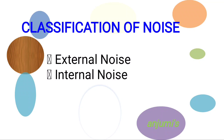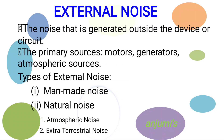The two types are external noise and internal noise. External noise is the noise which is due to sources outside the receiver. External noise is classified into man-made noise and natural noise. Natural noise is again divided into atmospheric noise and extraterrestrial noise.